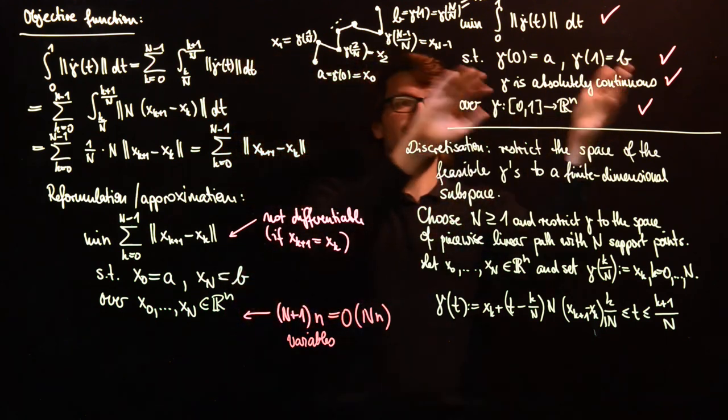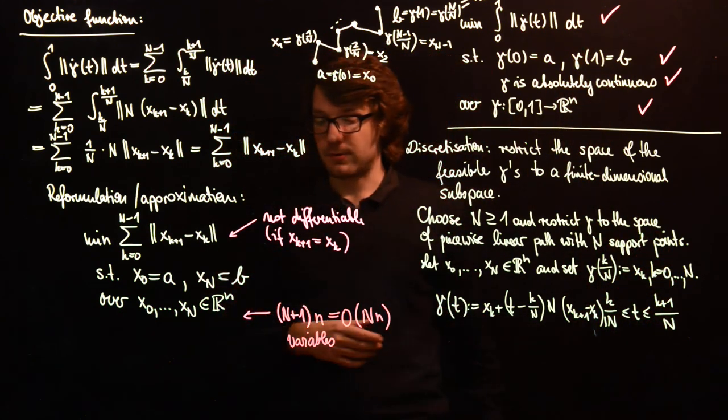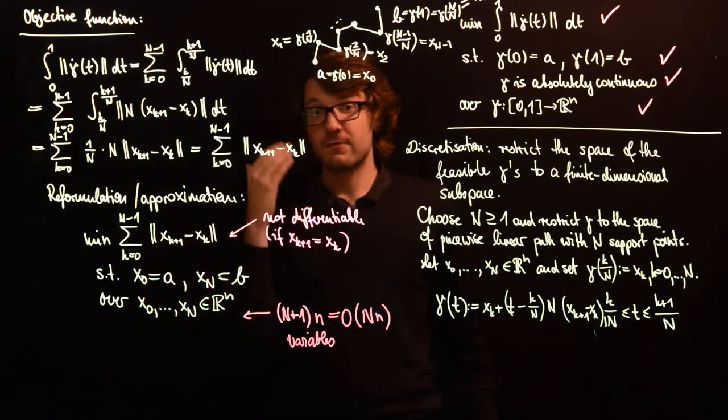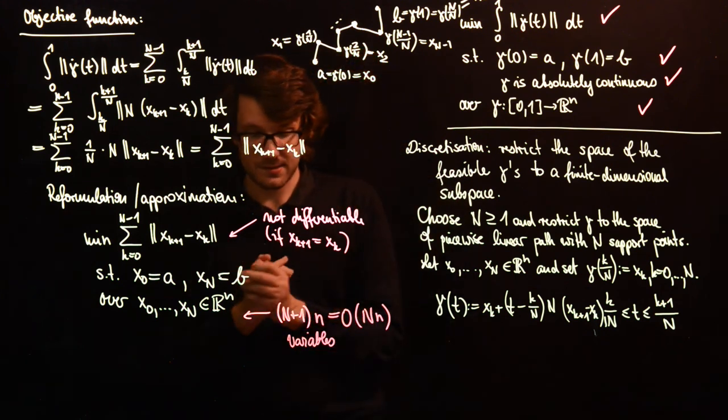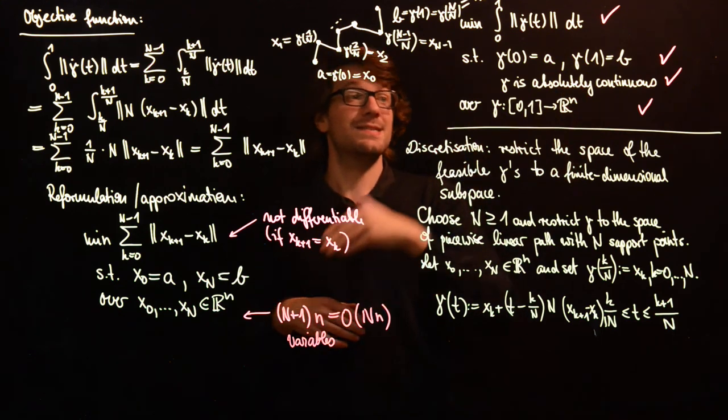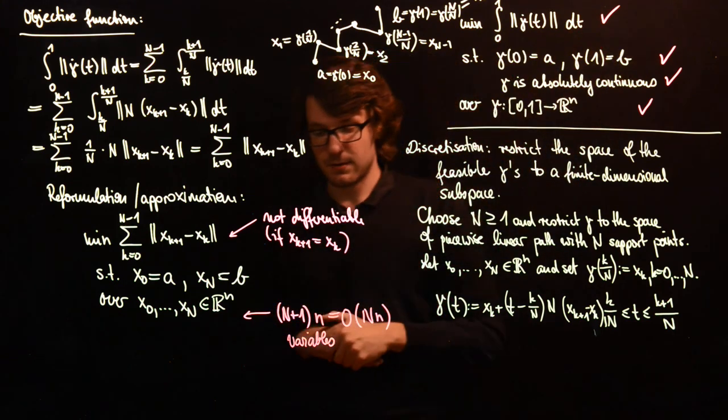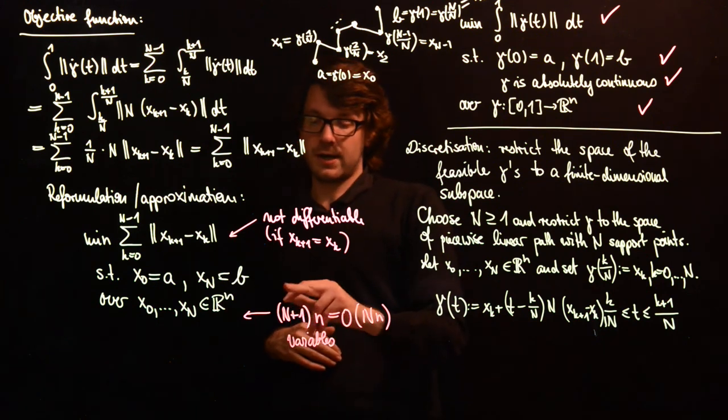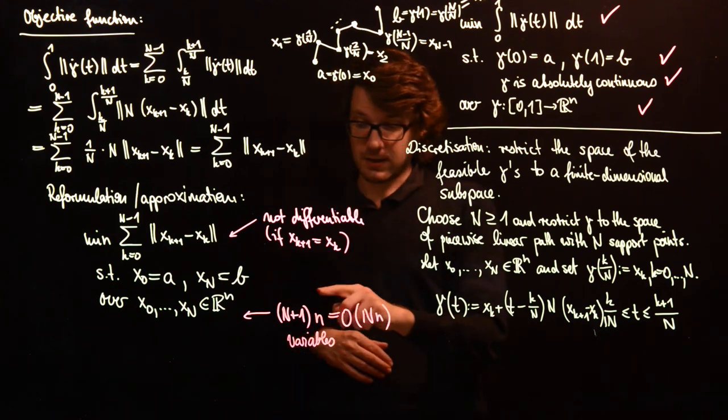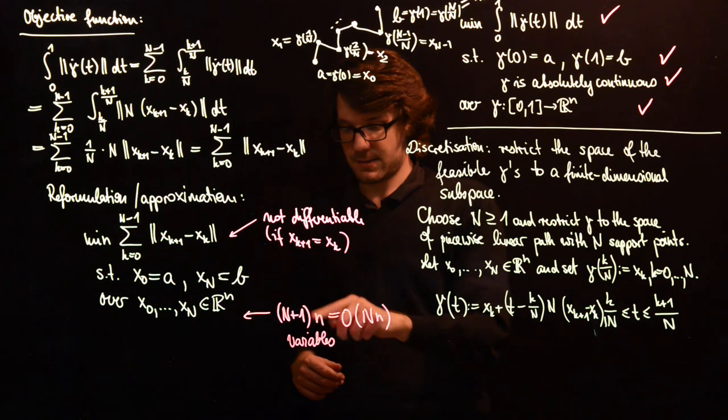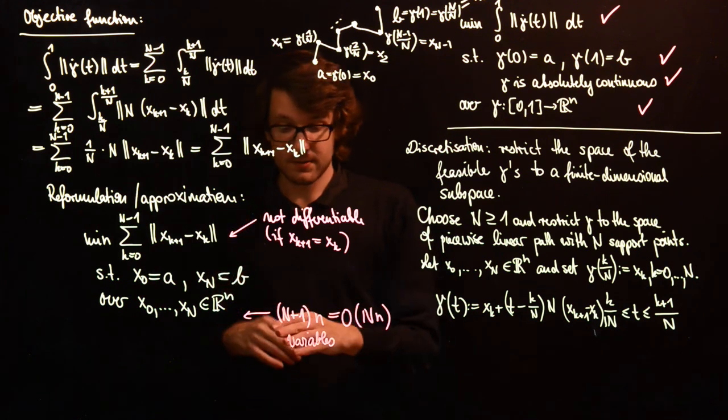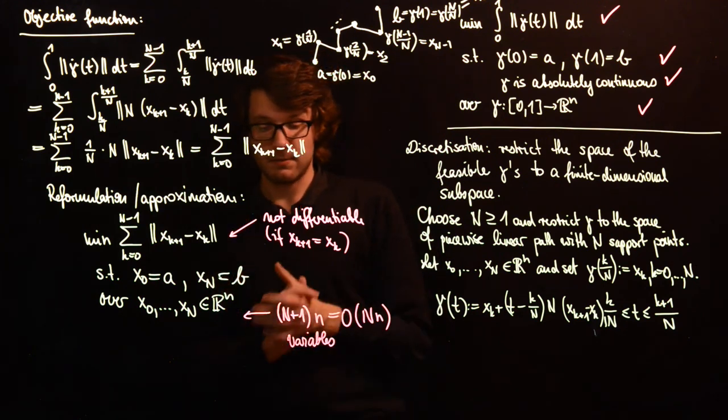And depending on how fine you discretize this, and of course this problem is not really worth discretizing, but there are other variational problems which you can discretize in a meaningful way. And the more and more variables you have, the more precisely your solution might approximate the infinite dimensional problem. And then you want to choose a really high capital N, and whenever you have a large dimensional space, then this small n might become large. And so for fine discretizations, this might actually become a large scale problem.